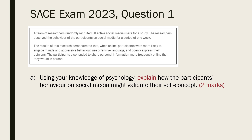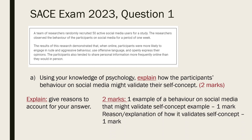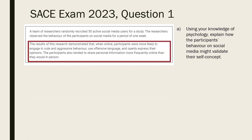Let's break down what the question requires. The lead-in verb is 'explain,' so you need to give reasons to account for your answer. This is a two-mark question, so one mark is for a specific example of behaviour on social media, and the other mark is for your reason or explanation of how this behaviour validates self-concept. To answer in the context of the research results, we need to identify the relevant information in the source material — specifically the paragraph describing the online behaviour of participants.